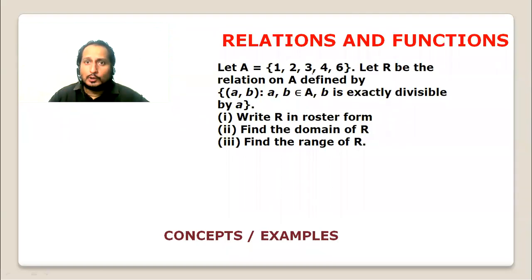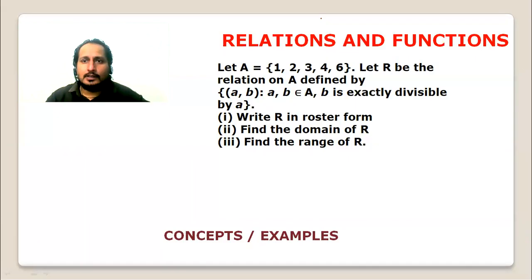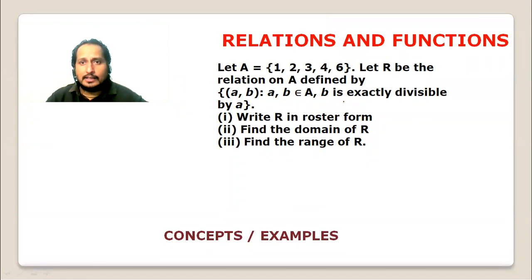Let A equal {1, 2, 3, 4, 6}. Let R be the relation on A defined by: (a, b) where b is exactly divisible by a.